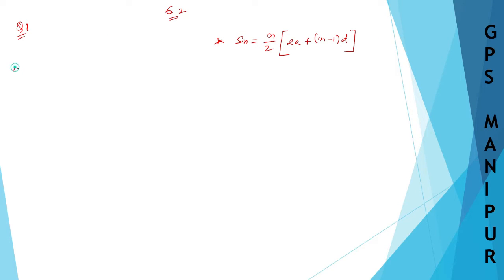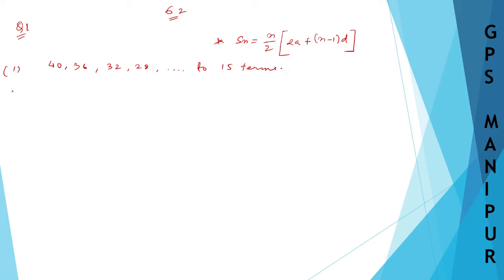Let me start with number 1. We need to find the sum of: 40, 36, 32, 28 — to 15 terms. So we need to find the sum of 15 terms, which means we need to find S15.